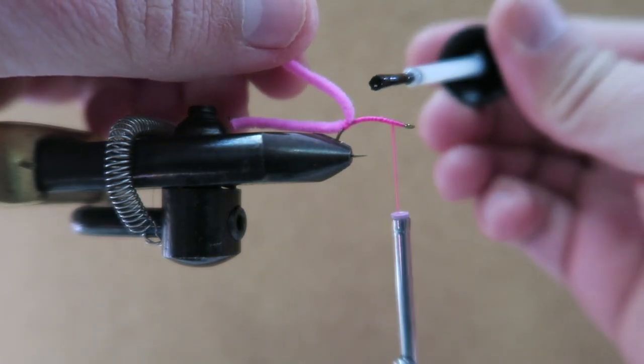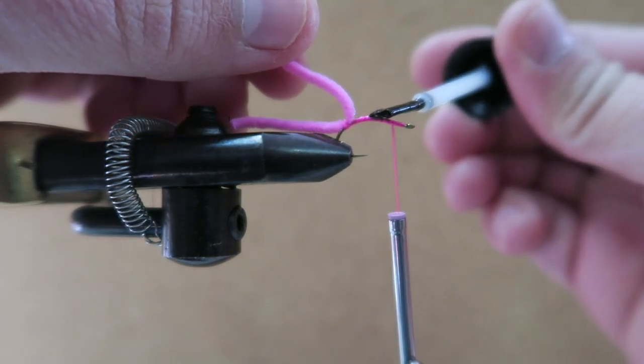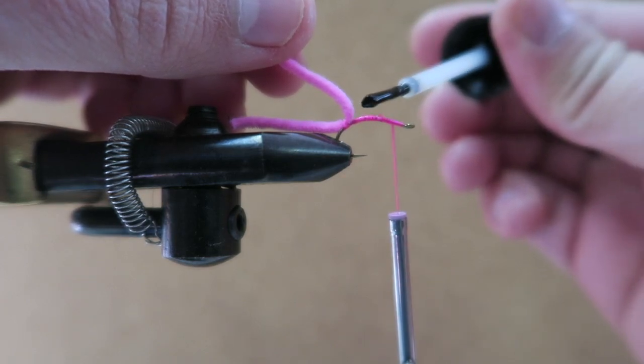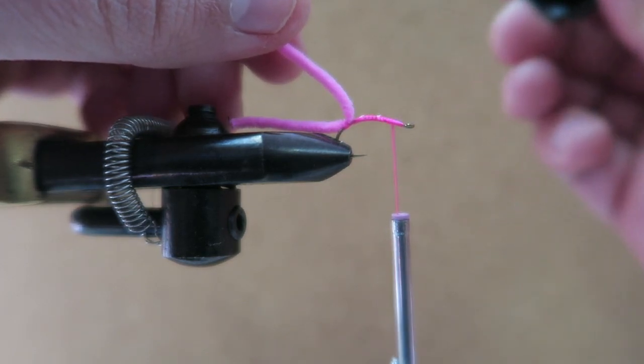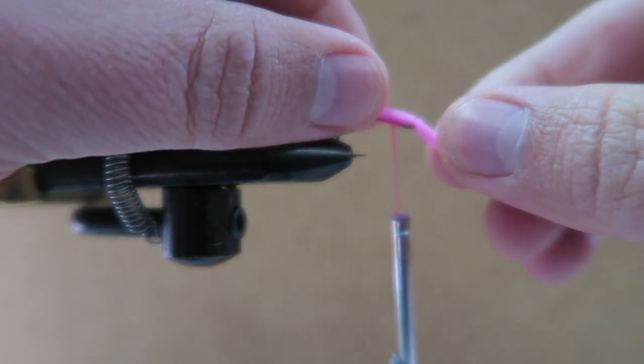I usually like to take a little bit of head cement and just run along the top. It just helps the worm stick better so it doesn't roll around. You just lay it down here.